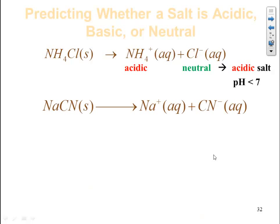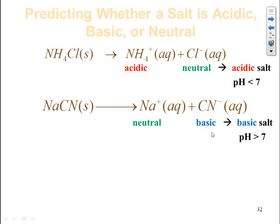Sodium cyanide breaks up into sodium ions and cyanide ions. Is sodium one of the cations we memorize as neutral? Yes. Is cyanide one of the anions we memorized as neutral? No — therefore it adds basicity to the salt. With a neutral cation and a basic anion, the overall salt is basic, and we expect the pH to be greater than 7.